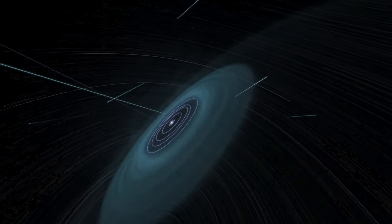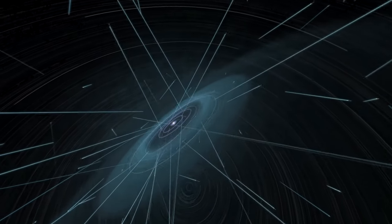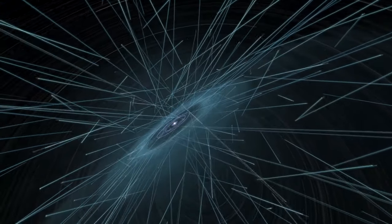Planets interact with the rotating disk and lose momentum moving their orbits closer to the sun, or gain momentum increasing their orbital distance from the sun.